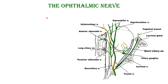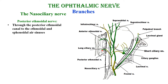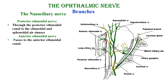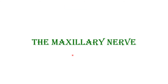Continuing the branches of the nasociliary: it gives the posterior ethmoidal nerve entering the posterior ethmoidal canal, and through the anterior ethmoidal foramen it reaches the cranial cavity. It then leaves the cranial cavity through a slit on the lateral side of the cribriform plate of the ethmoid to reach the nasal cavity — called the internal nasal nerve — supplying the nose. It also gives the external nasal nerve to the skin of the nose.